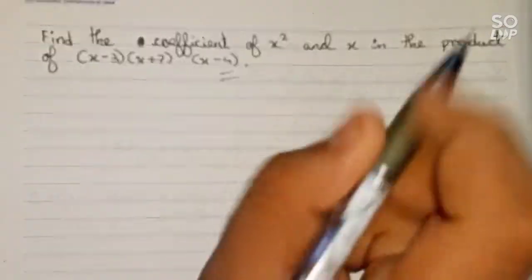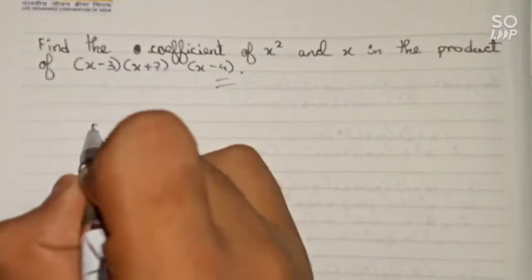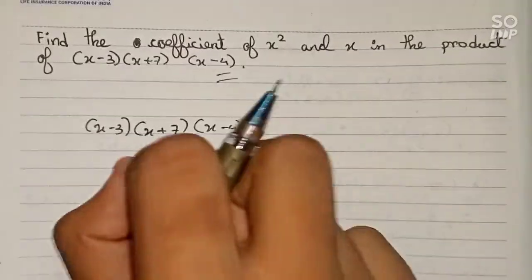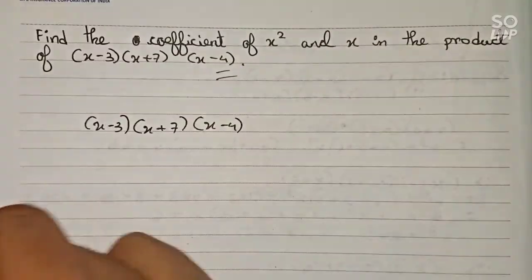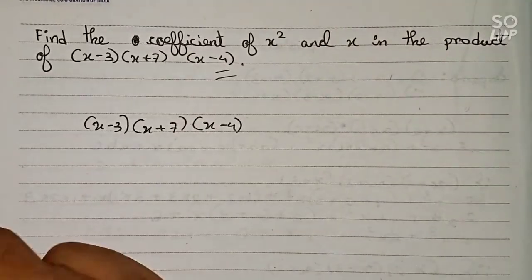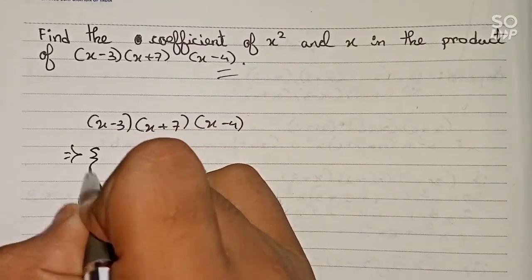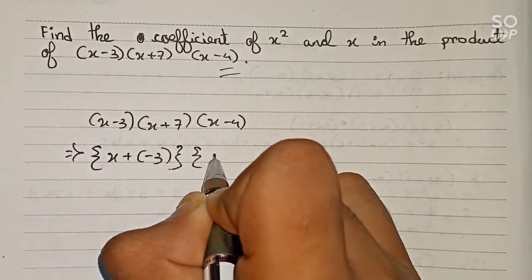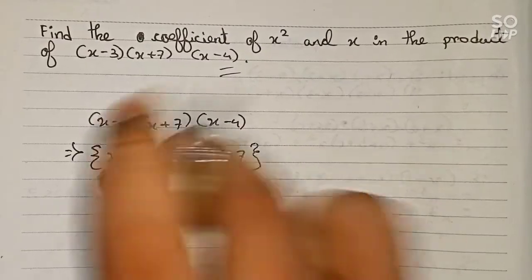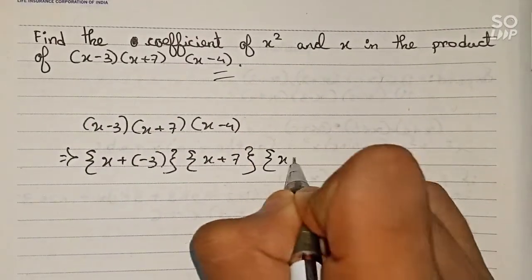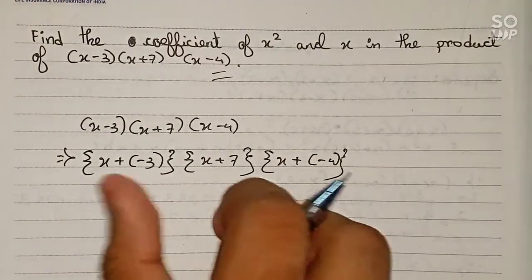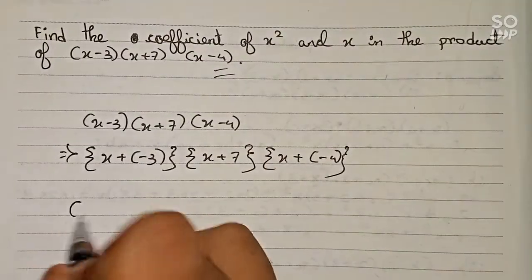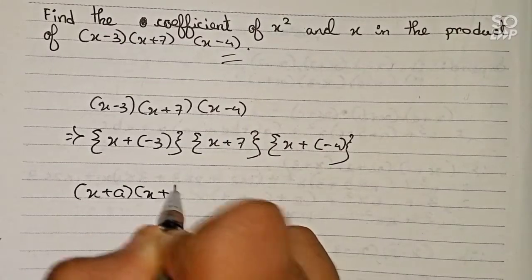First we will expand this form. We write (x minus 3) multiplied by (x plus 7) multiplied by (x minus 4). We convert the minuses into plus form so we can use the formula (x plus a) multiplied by (x plus b) multiplied by (x plus c). So we rewrite it as (x plus minus 3)(x plus 7)(x plus minus 4) — now all three sides have plus, so we can use the identity.